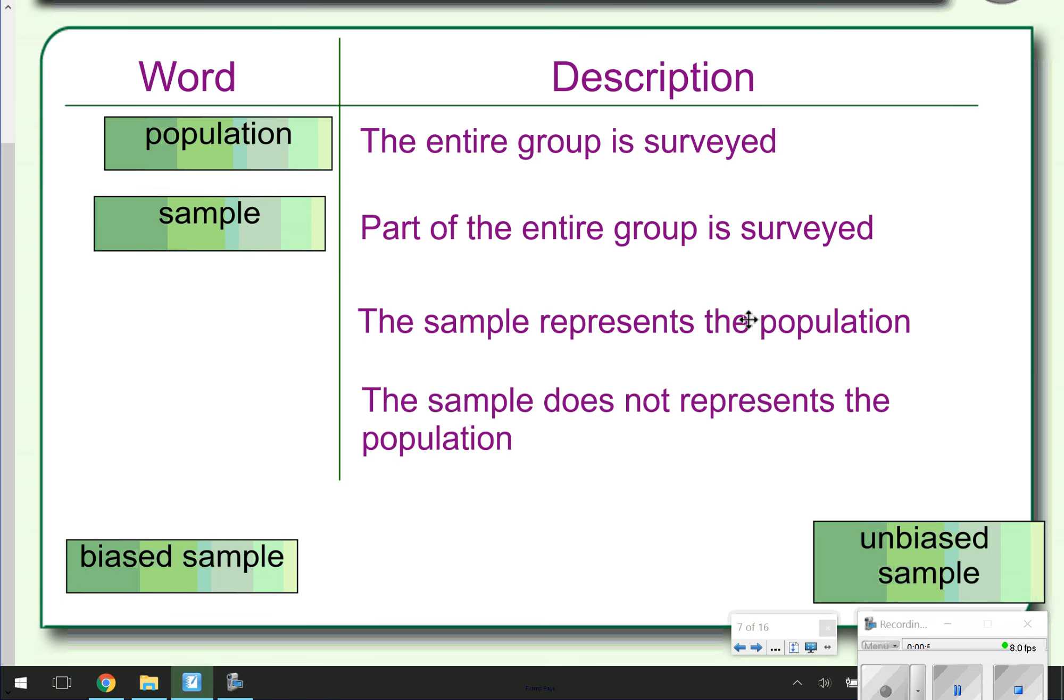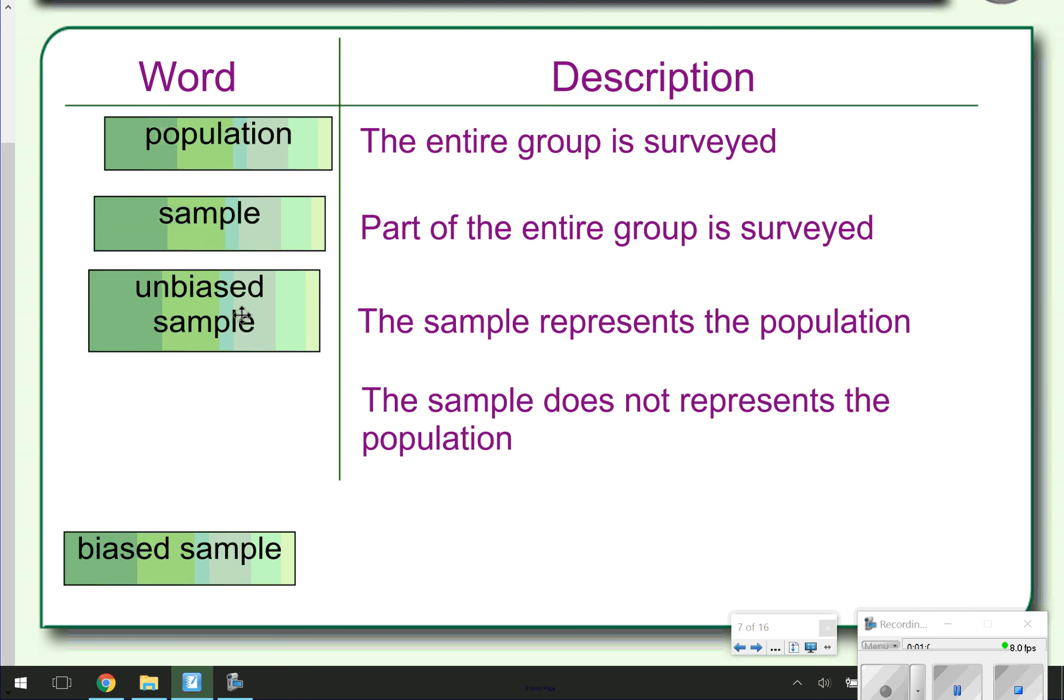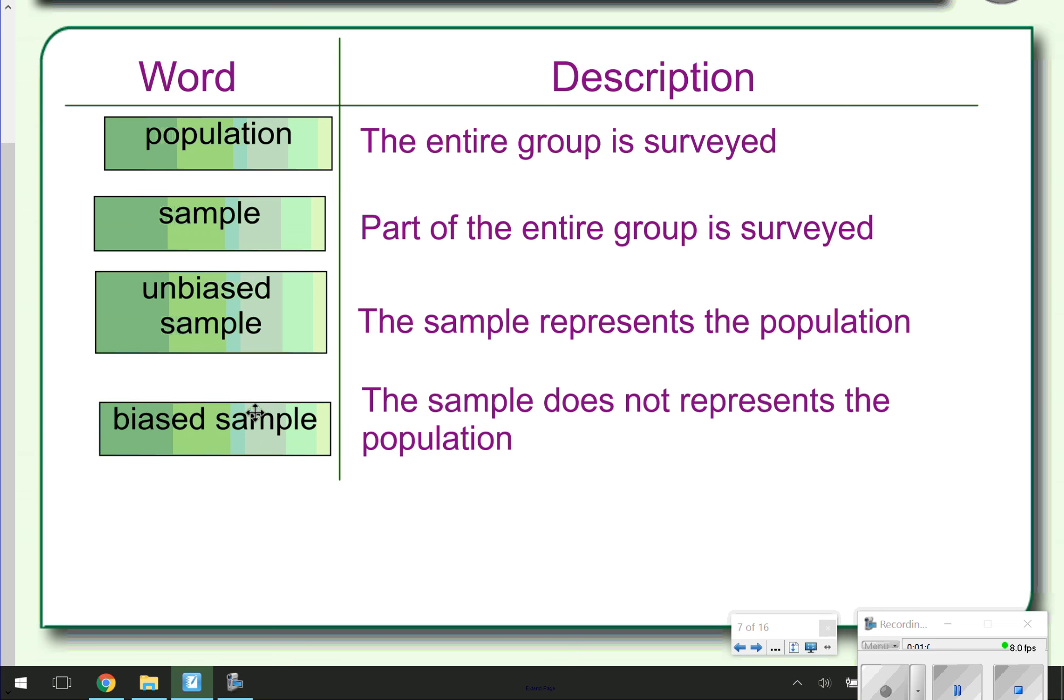When the sample is represented in the population, that is going to be considered an unbiased sample. But when the sample does not represent the population, that will be a biased sample, meaning a biased outlook.